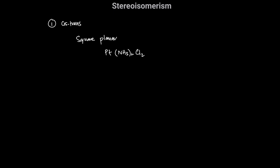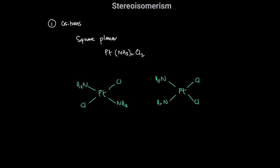Platinum has square planar geometry, and what you can have is the two chlorines opposite each other and the two ammonias opposite each other — that is the trans isomer. Or you can have the two chlorines on the same side and the two ammonias on the same side — that is cisplatin.